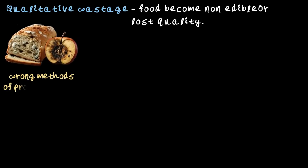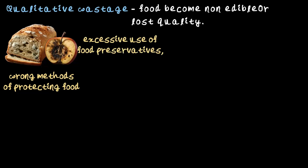First up: using the wrong method to protect food. If bread or apples aren't stored or protected properly, they can grow mold and become completely inedible — we all know that feeling when you reach for a piece of bread and it's covered in green mold. Excessive use of preservatives can also make food inedible. While preservatives are meant to protect food, overdoing it can mess with the quality, make it unsafe to eat, and cause long-term health impacts.